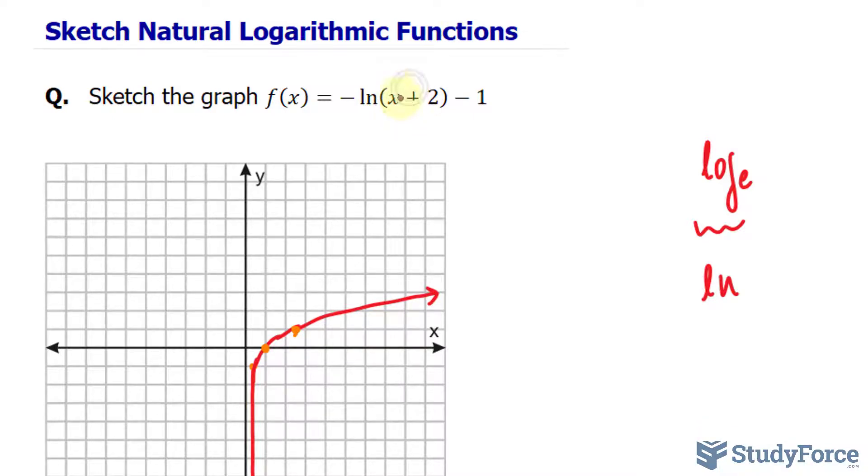Always start with this part. So we have log e of x plus 2. This plus 2 means that we'll be shifting these three reference points two units to the left. If this is positive, it's to the left, and if it's negative, it's to the right.